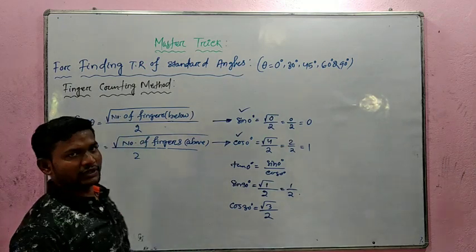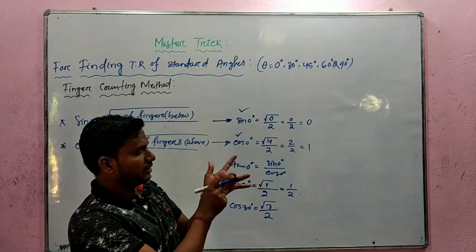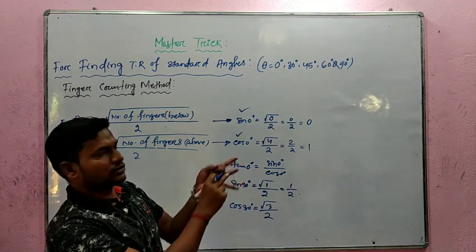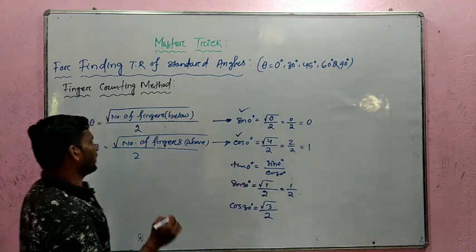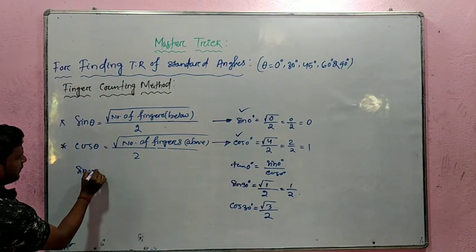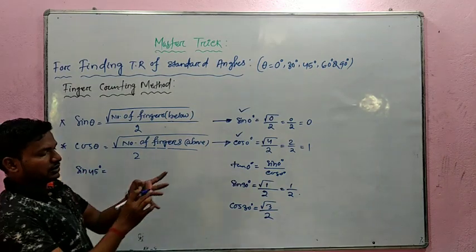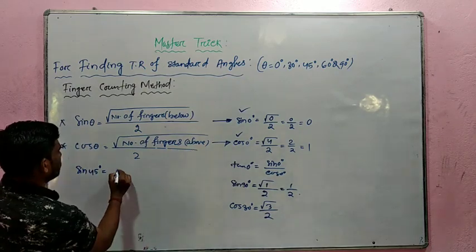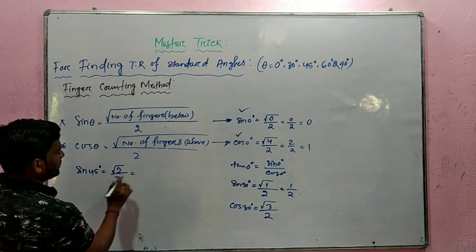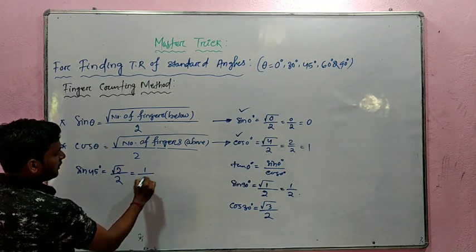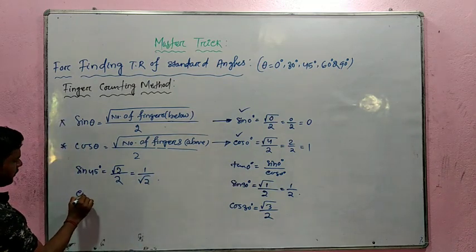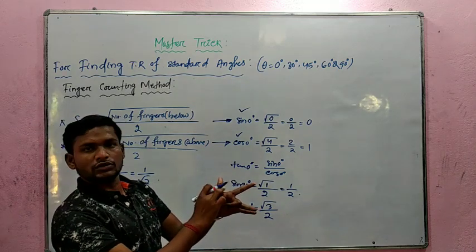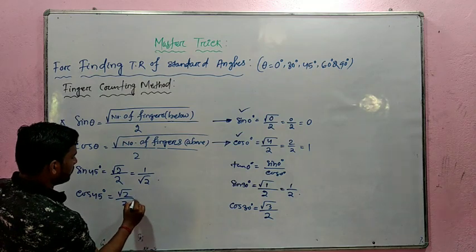Now for 45 degree: close the middle finger for 45 degree. The number of fingers below is 2, and above is also 2. Sin 45 equals square root of 2 by 2, simplified as 1 by root 2. Similarly, cos 45 equals square root of 2 by 2, which is also 1 by root 2. So sin 45 and cos 45 are both equal to 1 by root 2.